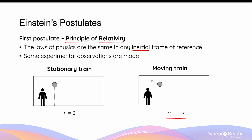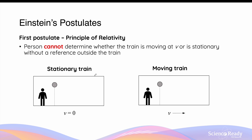In both examples of inertial reference frames, the two people are making the same experimental observations of the falling motion of the ball. This is because the first postulate of special relativity states that laws of physics, which includes Newtonian physics, are applied the same way in any inertial frame of reference — so that includes a stationary reference frame and a constant velocity reference frame. Since the experimental observations are made identically, the person in the train, whether it's stationary or moving, cannot determine whether the train is either moving or stationary without a reference outside the train.